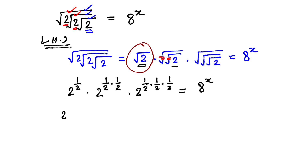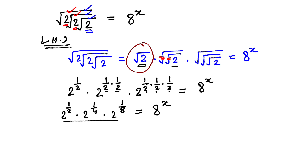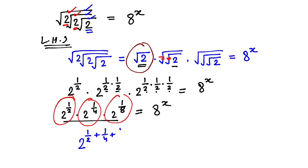So we have 2 raised to the power 1 by 2, then 2 raised to the power 1 by 4, and then 2 raised to the power 1 by 8 — since 2 × 2 × 2 is in the denominator — which is equal to 8 raised to the power x. Now for this expression, to multiply all three terms with the same base 2, we add the powers: 1 by 2 plus 1 by 4 plus 1 by 8, which is equal to 8 raised to the power x.